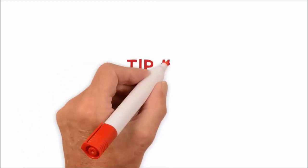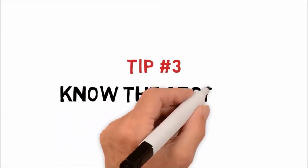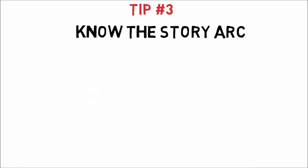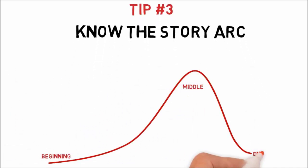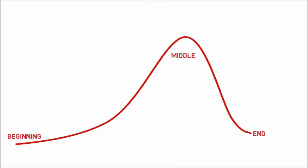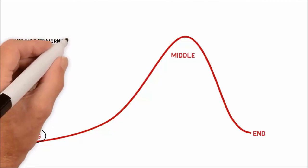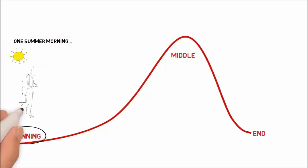Tip 3: Know the story arc. A typical story is composed of three parts: the beginning, the middle, and the end. The beginning is where you try to draw your audience's attention to the story you want to tell. Here, you will introduce the characters, set the scene, and begin the plot.